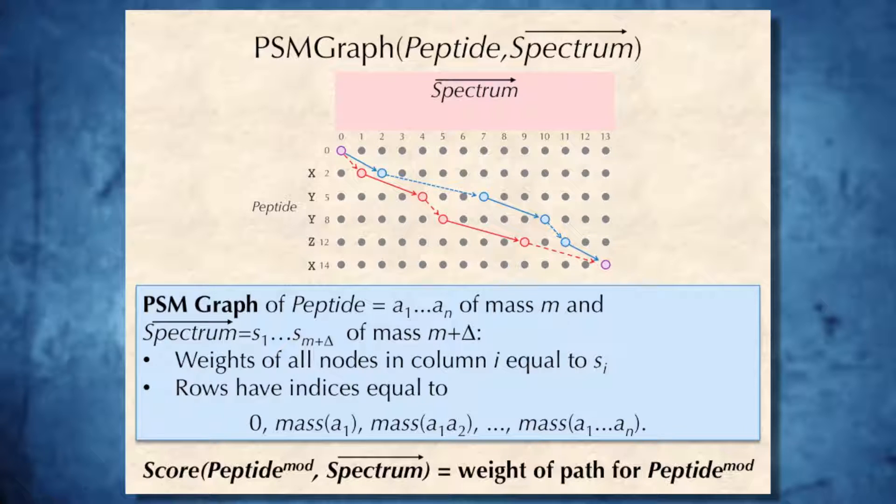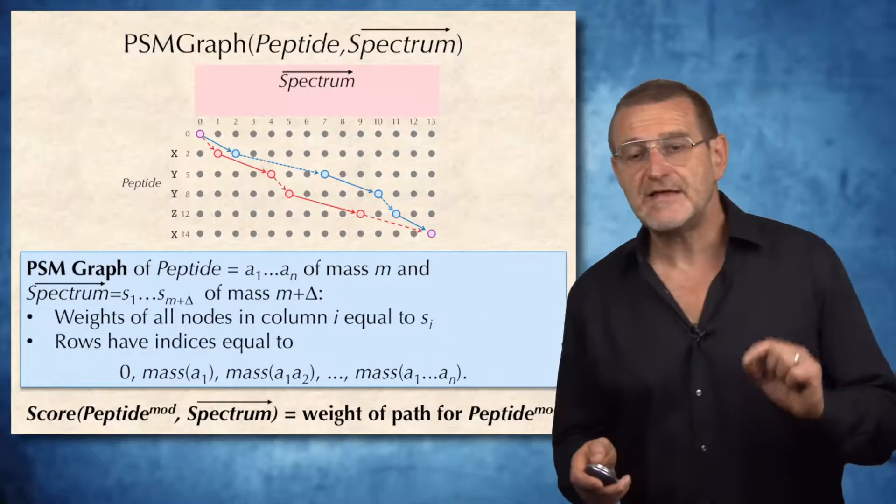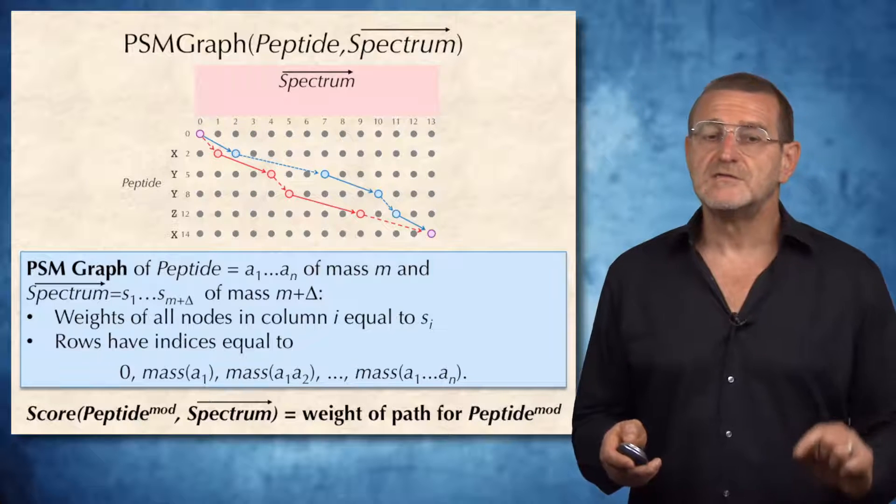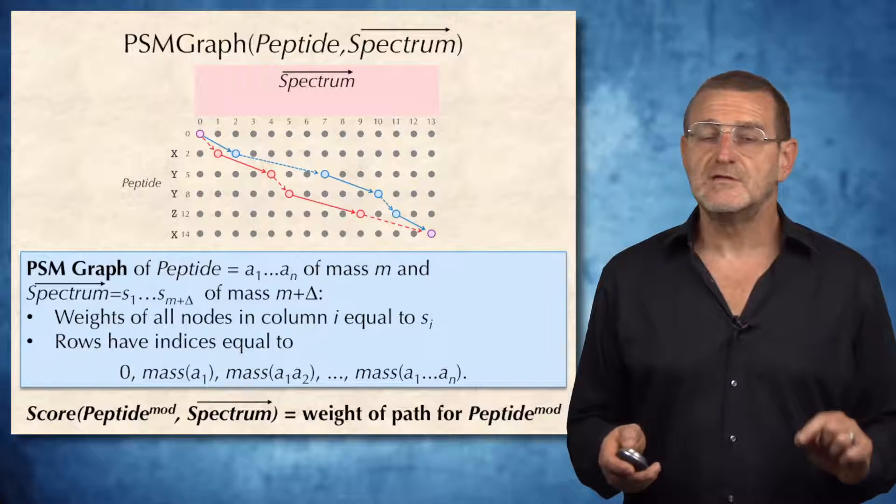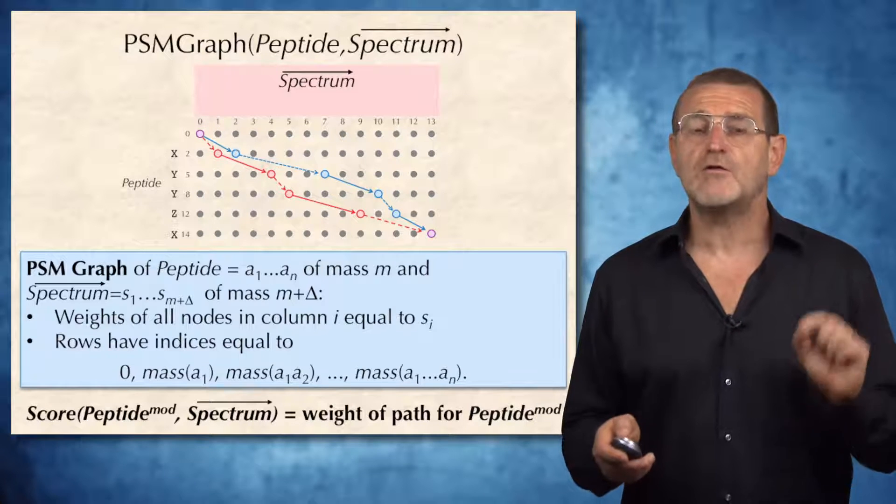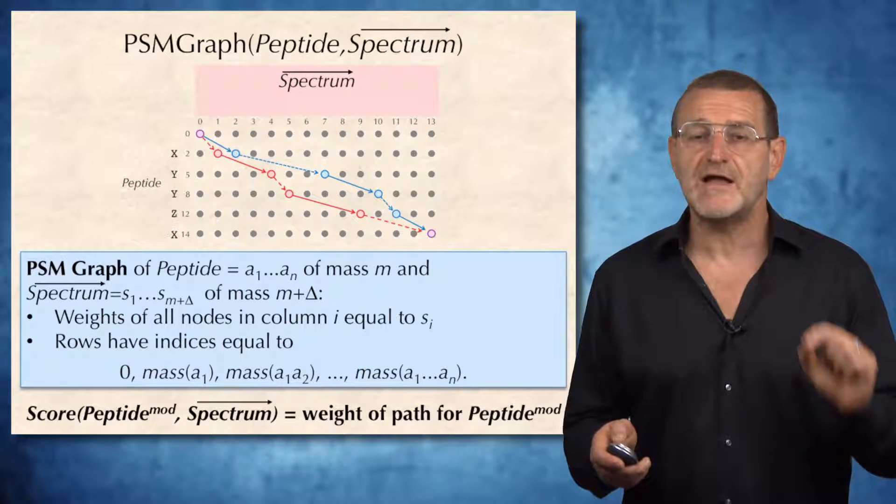which is defined as the graph where weights of all nodes in column i are equal to the i's coordinate in the spectrum vector. And the rows in this graph, it's important to note, have indices not equal to 0, 1, 2, 3, but equal to 0, mass of A1, mass of A1 A2, and masses of prefixes of the unmodified peptide. And in this formulation, the score between modified peptide and spectrum is simply the weight of paths for the modified peptide.